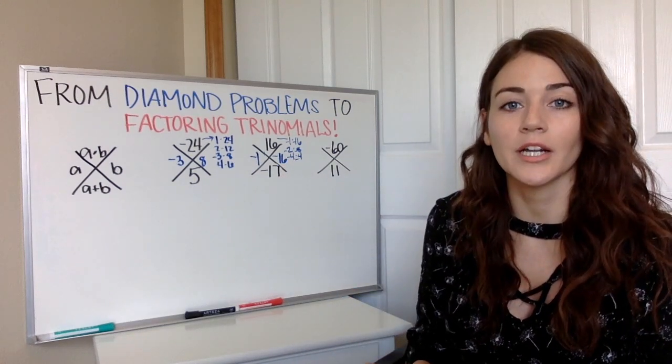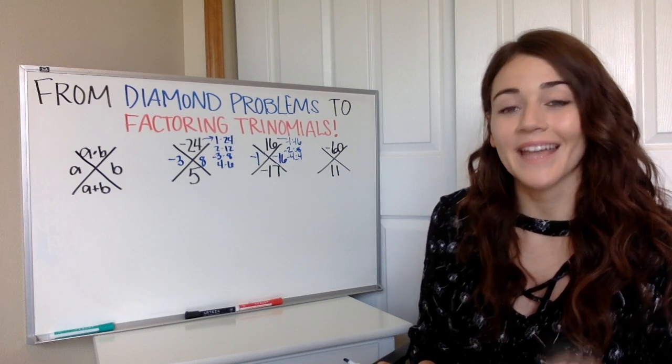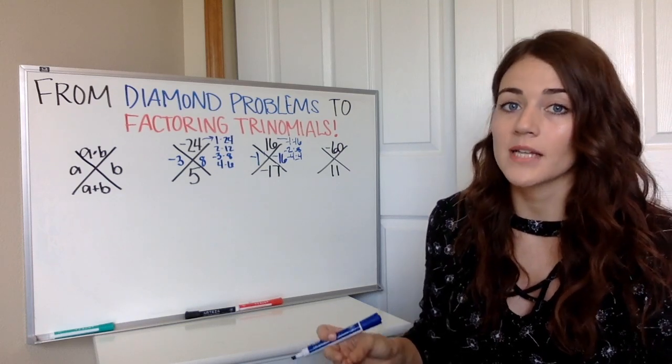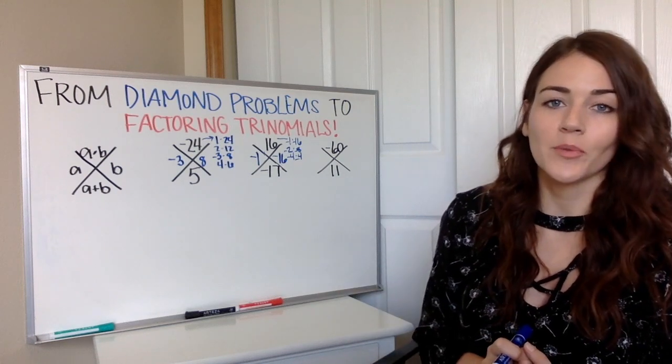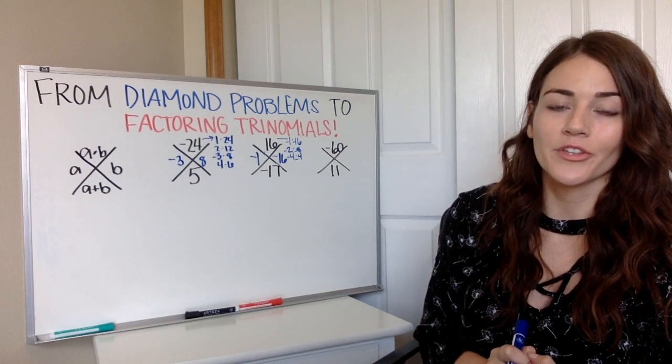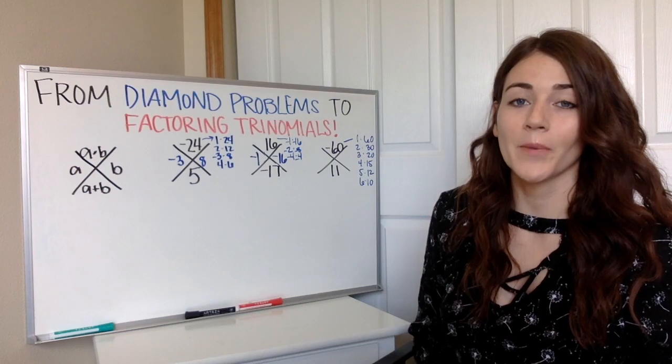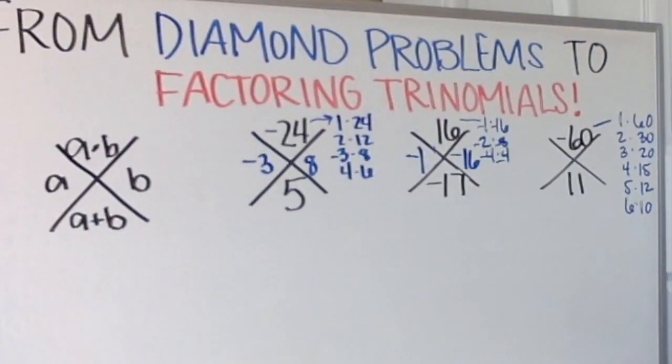And then my last one here, I am multiplying to get a negative so we know one's positive, one's negative. Go ahead and pause, list out the multiples and see if you can come up with the two numbers. Okay, so I have my multiples up there. Now I know one's going to be positive, one's going to be negative, and I know since this is positive I know my bigger number is going to be positive, my smaller number is going to be negative.